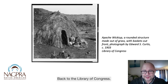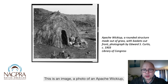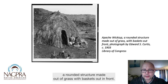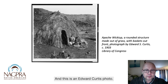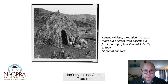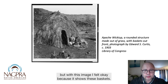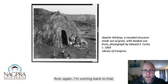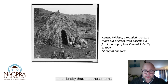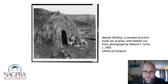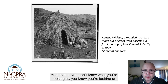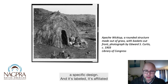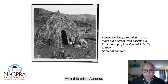This image is an Edward Curtis photo of an Apache wikiup — a rounded structure made out of grass with baskets out in front. These baskets have some very specific designs. I keep coming back to that identity that items are telling stories through design. Even if you don't know what you're looking at, you know you're looking at a specific design, and it's labeled as affiliated with this tribe — Apache. So if I was starting out and putting a summary together with all these baskets, I would look at something like this and put baskets with a similar shape, design, and size on a summary list of potential sacred objects to send to these tribes.